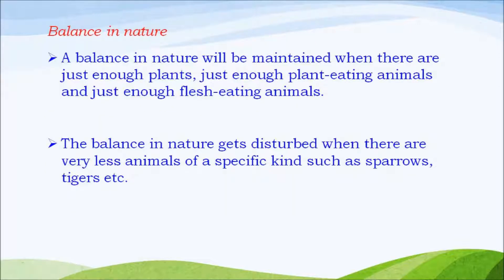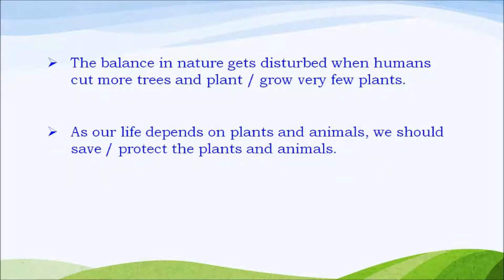Balance in nature will be maintained when there are just enough plants, enough plant-eating animals and enough flesh-eating animals. Balance in nature gets disturbed when there are very few animals of a specific kind such as sparrows, tigers, etc. The balance in nature also gets disturbed when humans cut more trees and plant or grow very few plants. As our life depends on plants and animals, we should save the plants and animals.